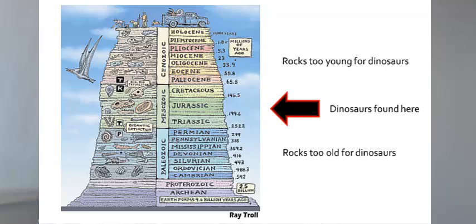Second, the right time. The rocks must be of the right age, from the Mesozoic era, the age of dinosaurs. Locally, you might have rocks that formed before the age of dinosaurs or after the age of dinosaurs. So you need to look for the right layer of rock, which is within the Mesozoic era.